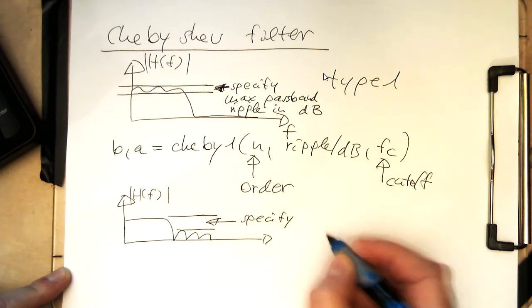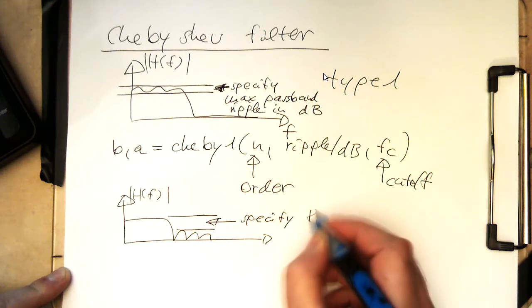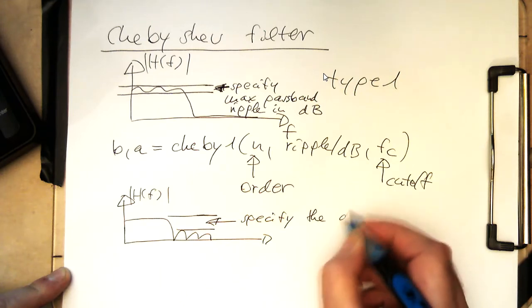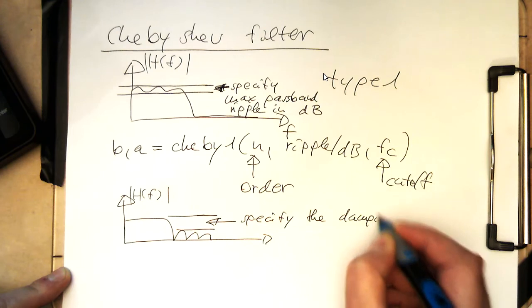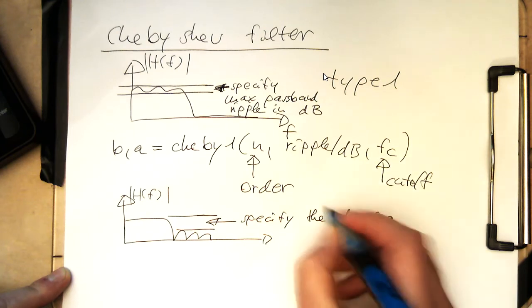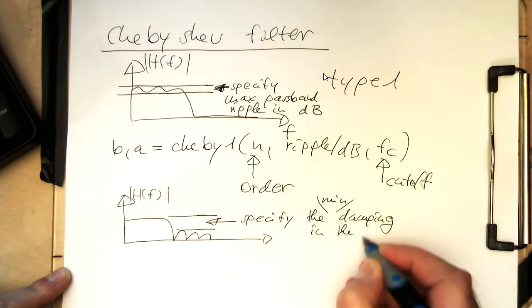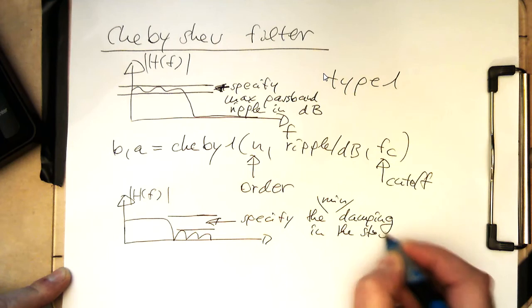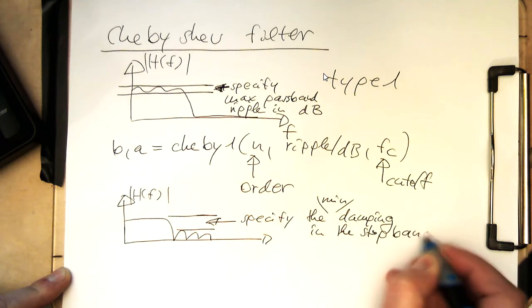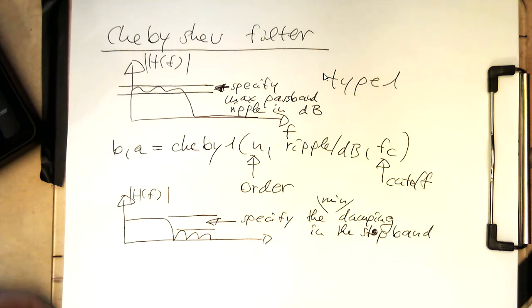So specify, specify the minimum, the minimum damping in the stopband. That's a bit like the Kaiser window specification here.